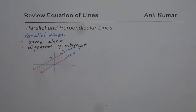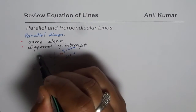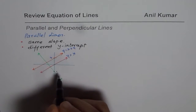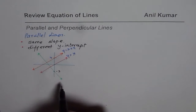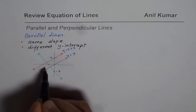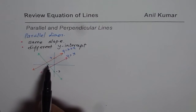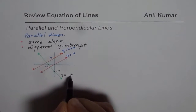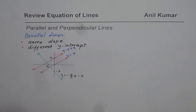Let me give you another example. Let's take a line which has a negative slope. The y-intercept for this line is minus 3, and the slope — rise over run — rise is negative 3, run is 2. So we can write the equation of this line as y equals to minus 3 over 2 times x, and the y-intercept is minus 3. So the equation is y equals minus 3 over 2x minus 3. That is the equation of the line drawn in green.